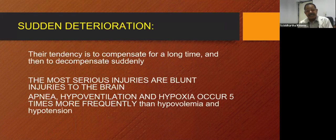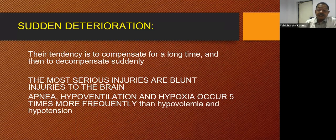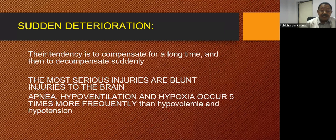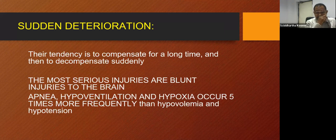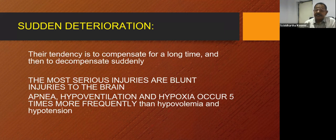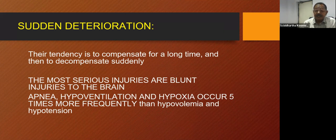Sudden deterioration in children is more common. Their tendency is to compensate for a long time and then decompensate suddenly. The most serious injuries are blunt injuries to the brain. Apnea, hypoventilation, and hypoxia occur five times more frequently than hypovolemia and hypotension.